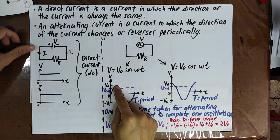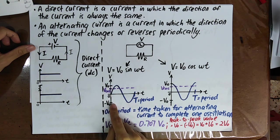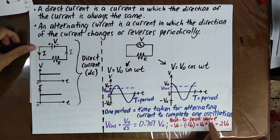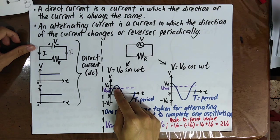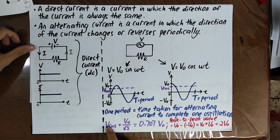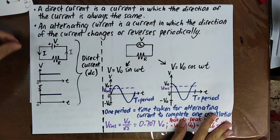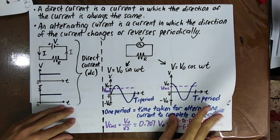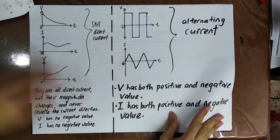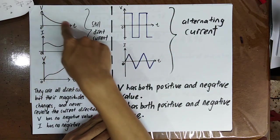The peak value is V₀, and the peak-to-peak value is 2V₀ — it is the difference between the top and bottom of the graph. The root mean square value is located here on the graph. For alternating current you have both positive and negative values, whereas for direct current you only have positive values.